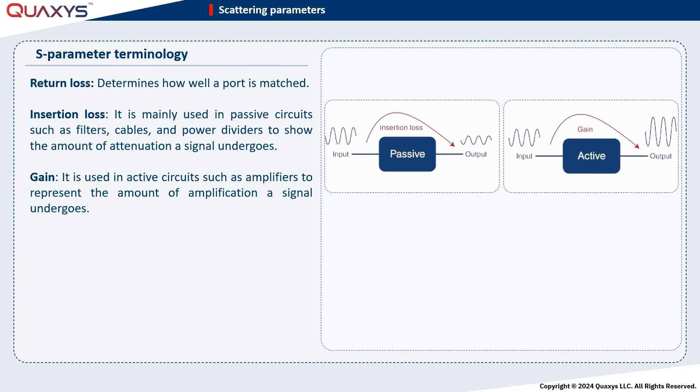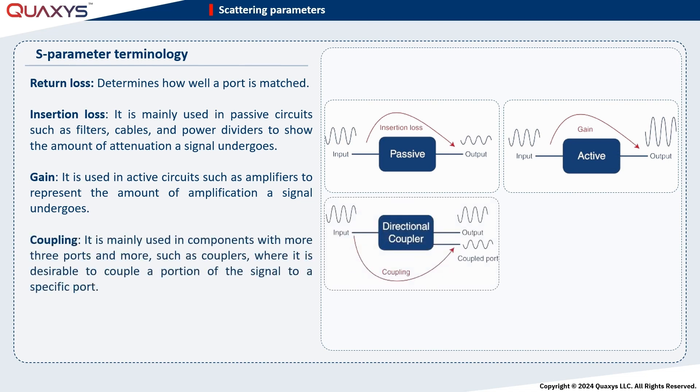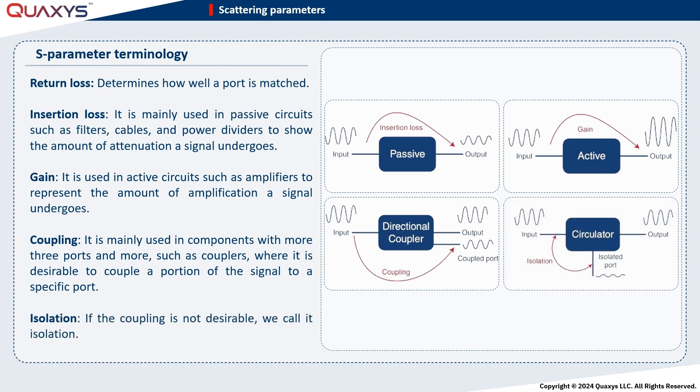The gain is mainly used in active circuits such as amplifiers to represent the amount of amplification a signal undergoes. Coupling is mainly used in components with three or more ports, such as couplers, where it is desirable to couple a portion of the signal to a specific port. If the coupling to specific ports is not desirable, it is called isolation. For circuits such as power dividers, isolators, and circulators, the signal should not leak from one port to another. Therefore, high isolation is desired in such circumstances.